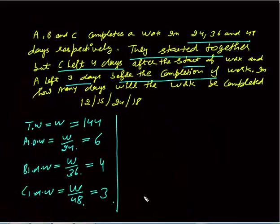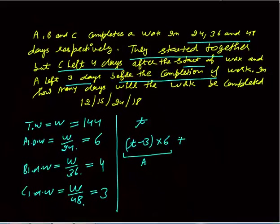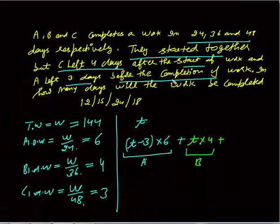We need to calculate the total number of days T for the work to get completed. A left three days before completion, so A worked for T minus three days. At 6 units per day, A's total work is 6(T−3). B worked the entire T days at 4 units per day, giving 4T units. C left four days after the start, so C worked only four days. At 3 units per day, C did 4 × 3 = 12 units of work.